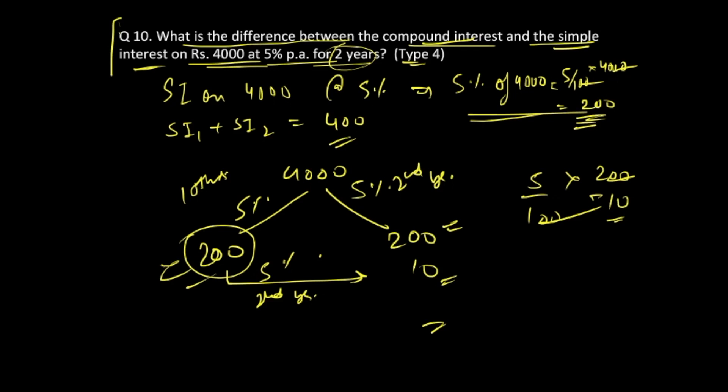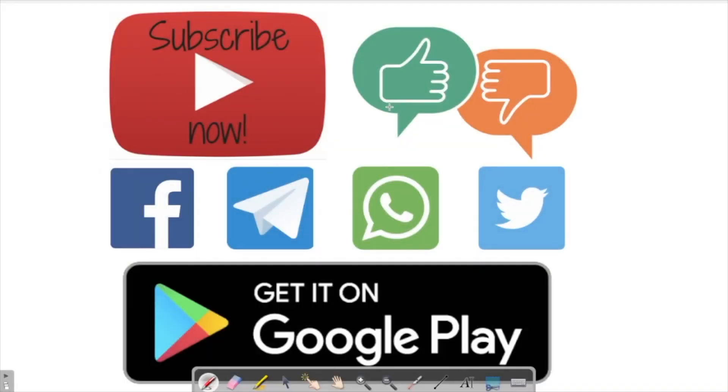If you add the entire interest for 2 years, you get 200 plus 200 plus 10, which equals Rs. 410. We already know that by simple interest we had generated Rs. 400, so the difference between them is Rs. 10. This is how you solve this particular question.